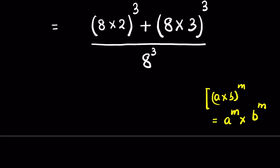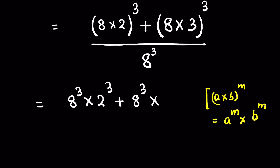Using this identity, we can write it as 8 raised to the power 3 times 2 raised to the power 3, plus 8 raised to the power 3 times 3 raised to the power 3, upon 8 raised to the power 3.